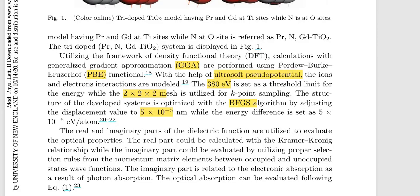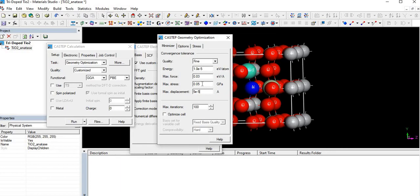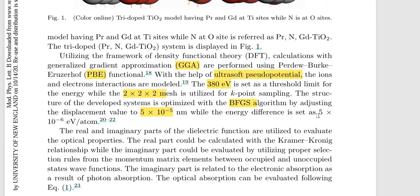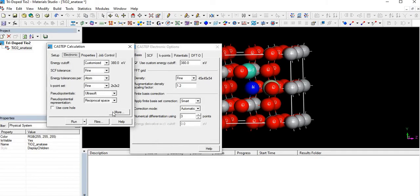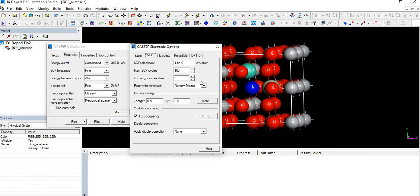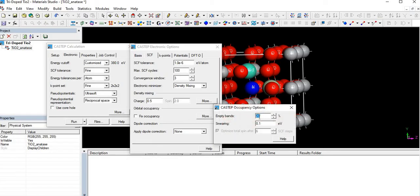The energy is 10^-6, and the energy difference is 5×10^-6 electron volts, so we have to change this. And let's do some other changes. Since we know that titanium oxide is a semiconductor, we set 12, which gives us good results.